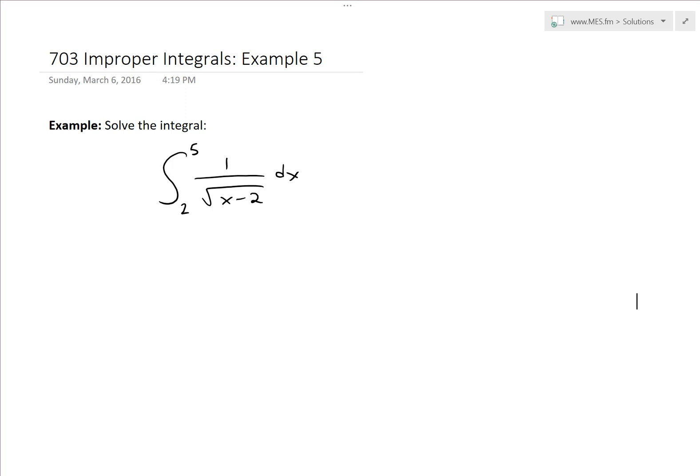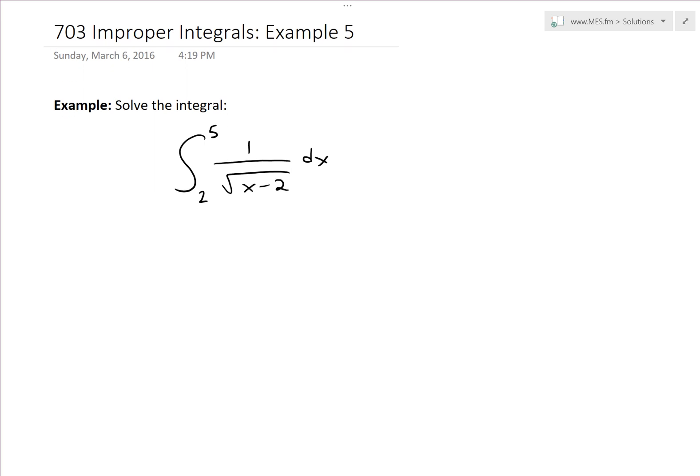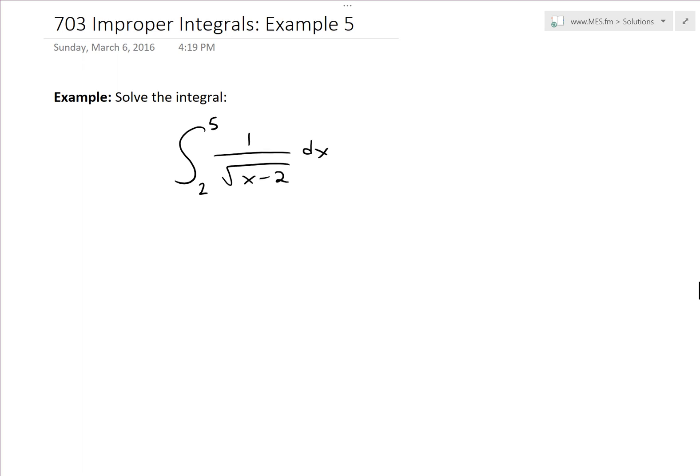It's time for another Math Easy Solutions, here to discuss further into improper integrals and go over Example 5. This one covers the integral from 2 to 5 of the function 1 divided by square root x minus 2 dx.